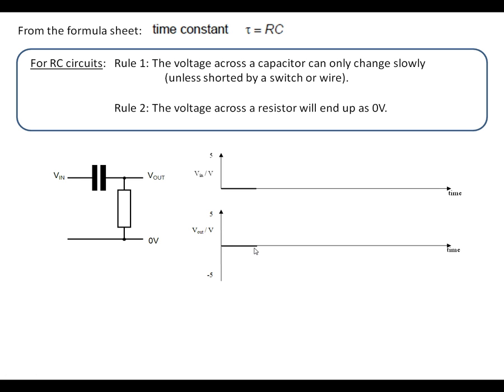And here we've got it marked on the graph. We're going to make V in jump up by 5 volts. Rule 1 says that the voltage across the capacitor cannot change suddenly. So if this jumps up by 5 volts, this side will also jump up by 5 volts.